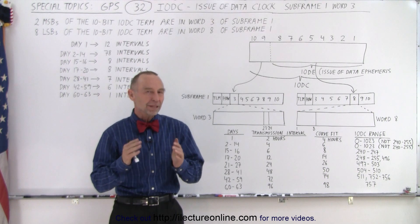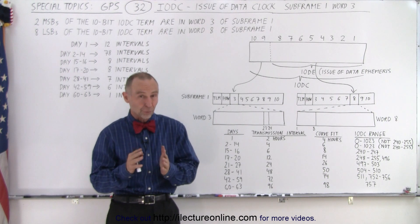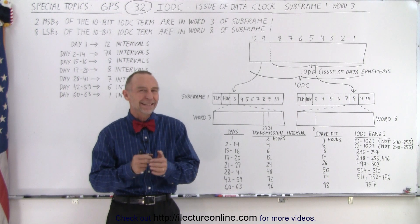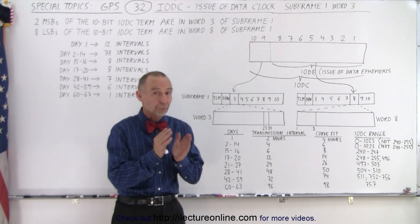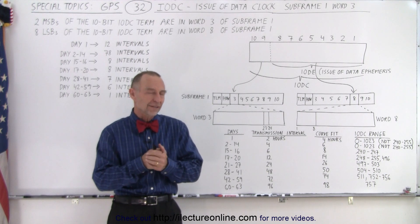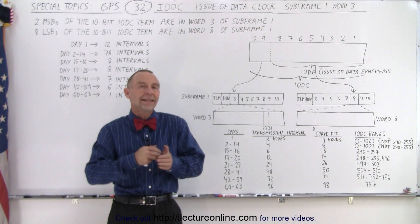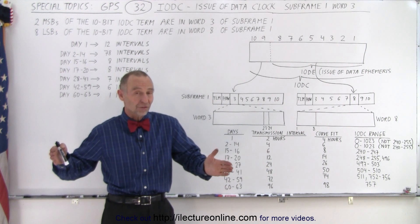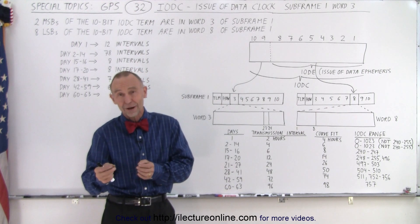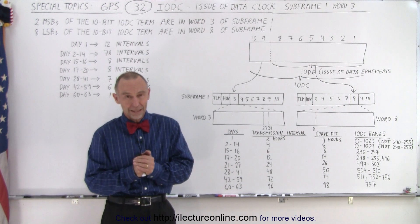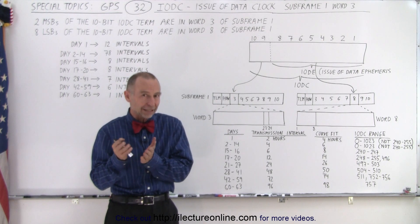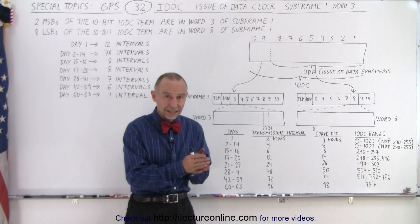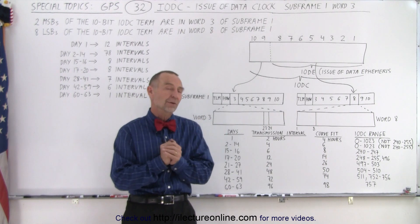The last bit of information that we get in Word 3 of subframe 1 is the IODC. But we only get part of that message in Word 3, only two bits, the most significant bits, the MSBs. And the next 8 bits of that message can be found in Word 8 of subframe 1. The 10 bits combined give you a particular number that is associated with a data set coming from that particular SV.